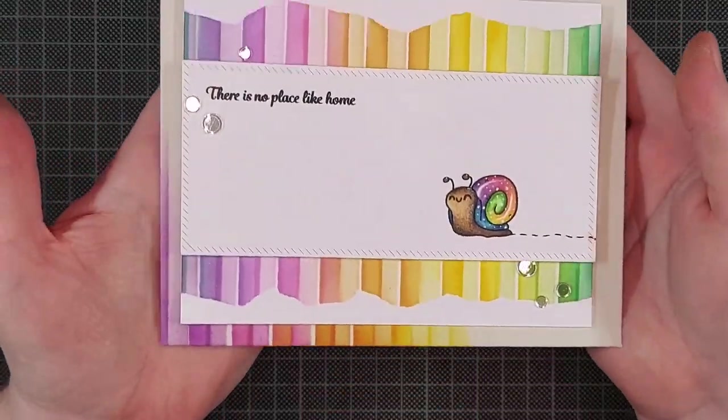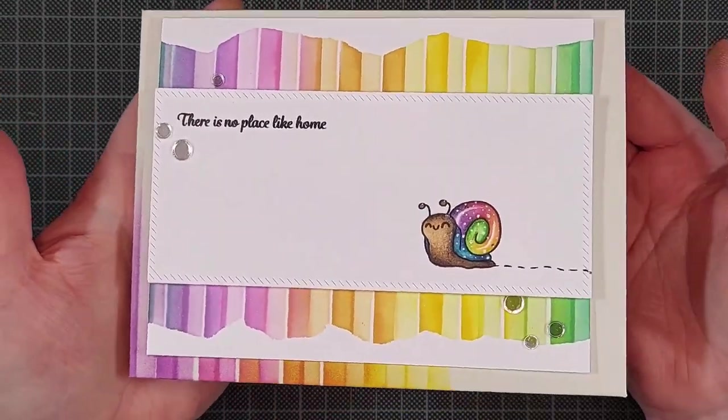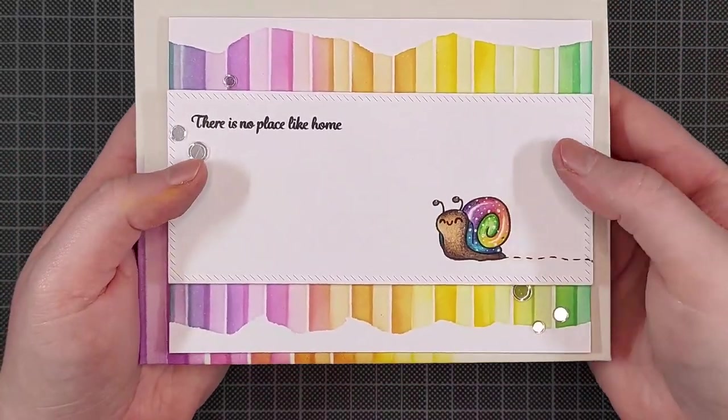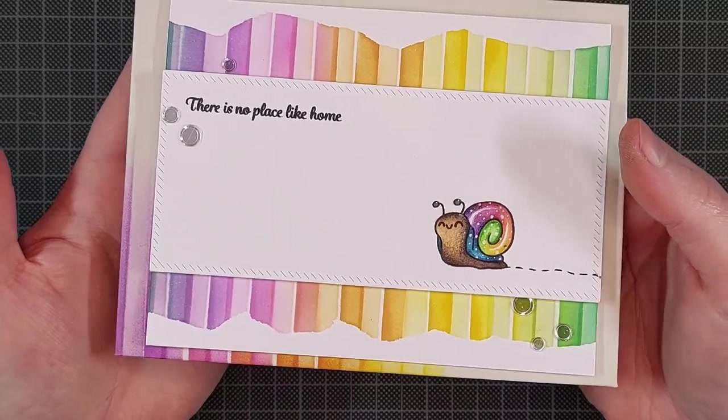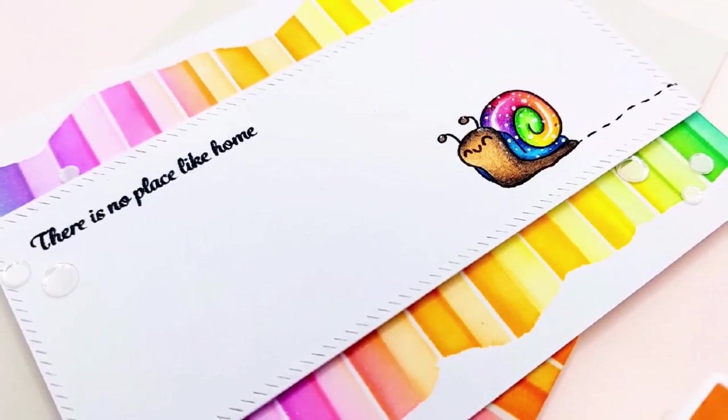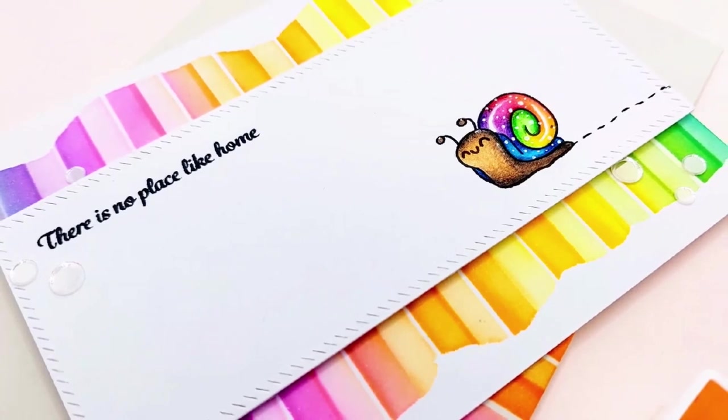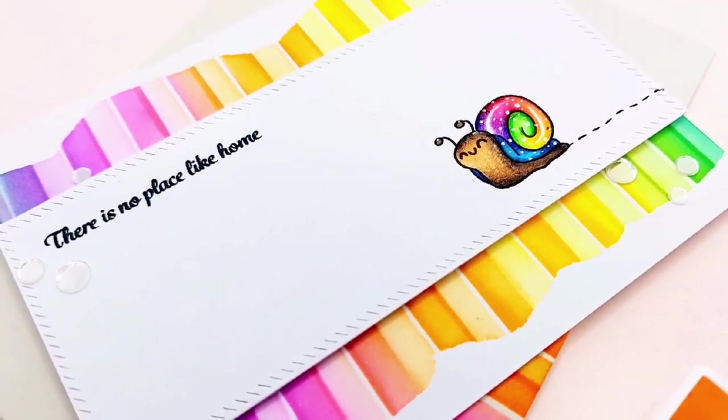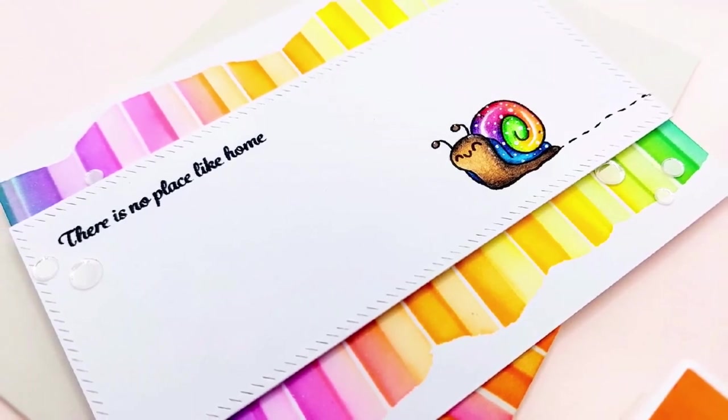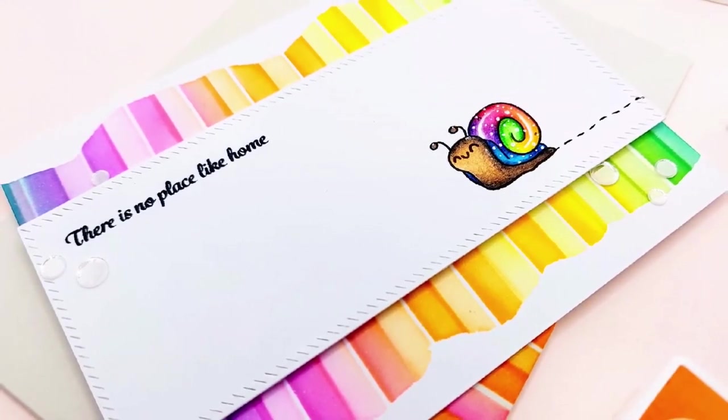That's it for this card and envelope. I really like the rainbow stenciling and the rainbow snail with that fun little sentiment. You can find a full list of supplies in the description below, as well as a link to the blog post and my Instagram. Please subscribe to my channel if you want to see more videos. And then I just want to thank you so much for watching. And I'll see you next time.